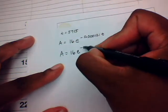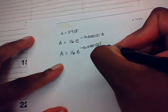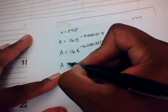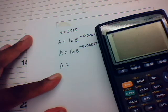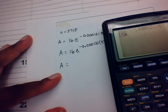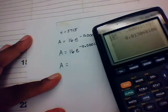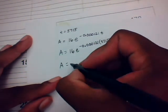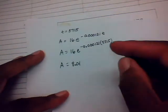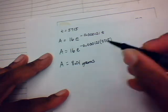We replace t with 5,715 in the formula: A equals 16 times e to the negative 0.000121 times 5,715. Typing this into the calculator — 16, then 2nd LN for e, then negative 0.000121 times 5,715, close parentheses, and press enter — gives approximately 8.01. So 8.01 grams of carbon-14 will be present after 5,715 years.